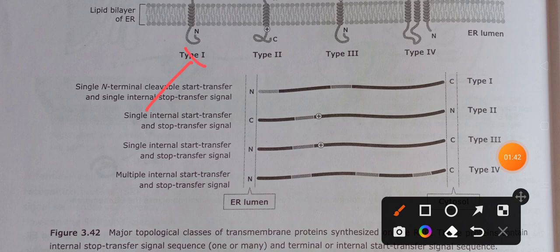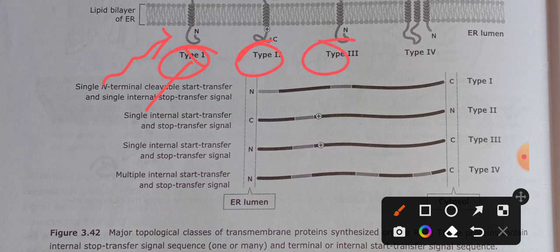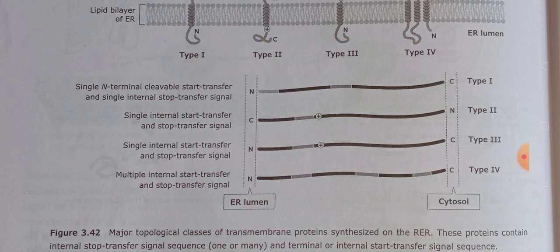All of these are transmembrane or integral proteins, meaning they have the ability to span the lipid bilayer either once or multiple times. Type 1, Type 2, and Type 3 proteins span the lipid bilayer one time, while Type 4 spans it more than once.